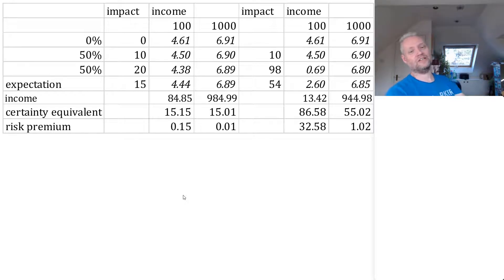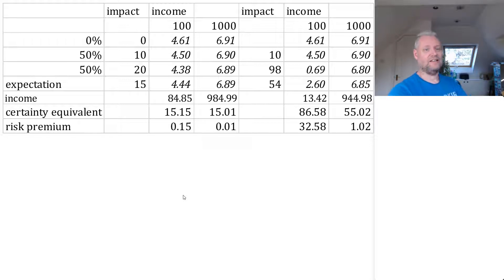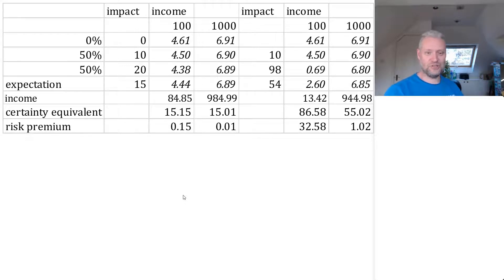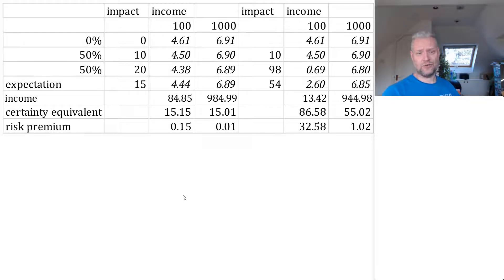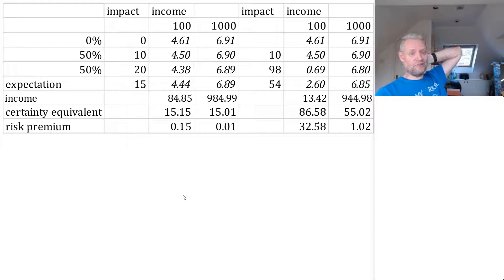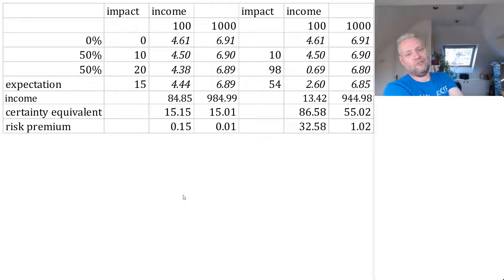Let's look at a worked example. In the second column, you're looking at impacts, and there are two scenarios: a 50% probability of losing 10 and a 50% probability of losing 20, meaning your expected impact is 15 — the average of 10 and 20. Now suppose we have an income of 1,000. Your baseline income is 1,000 and, assuming that utility is the log of income, your baseline utility is 6.91.